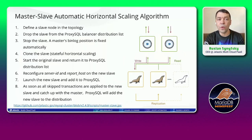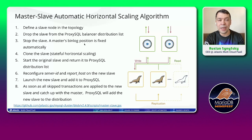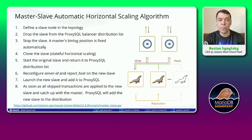For MasterSlave automatic horizontal scaling: when a customer presses the plus button, first we drop one slave from the ProxySQL load-balancing distribution list. Then we stop the slave and clone it in stateful mode with the whole data. We start the original slave and return it to the ProxySQL load-balancing list. Then we adjust configurations of the newly created slave node — specifically server ID and report host — and launch this new slave, adding it to ProxySQL. As soon as all transactions are applied to the new slave, ProxySQL will distribute requests to this new node as well.